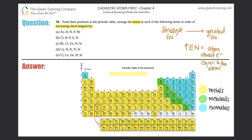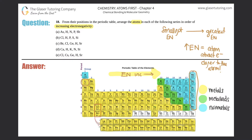As we go from left to right across a period, electronegativity will always increase. That means fluorine would be the most electronegative element, much greater than lithium because we're going from left to right. Just know that noble gases don't really count towards electronegativity because they're inert — they don't react much. So you could think of a wall being put there, and the largest electronegativity element would be fluorine.